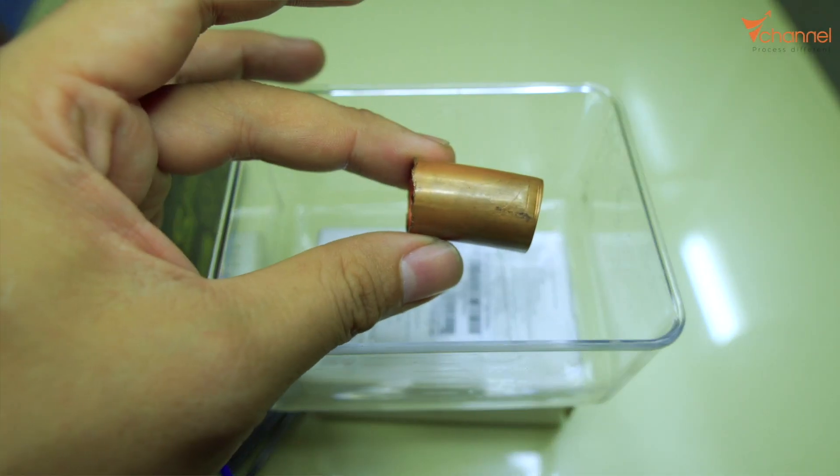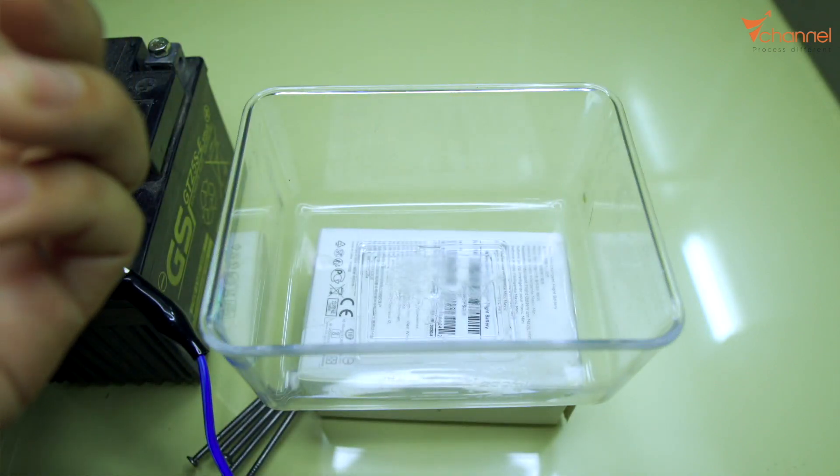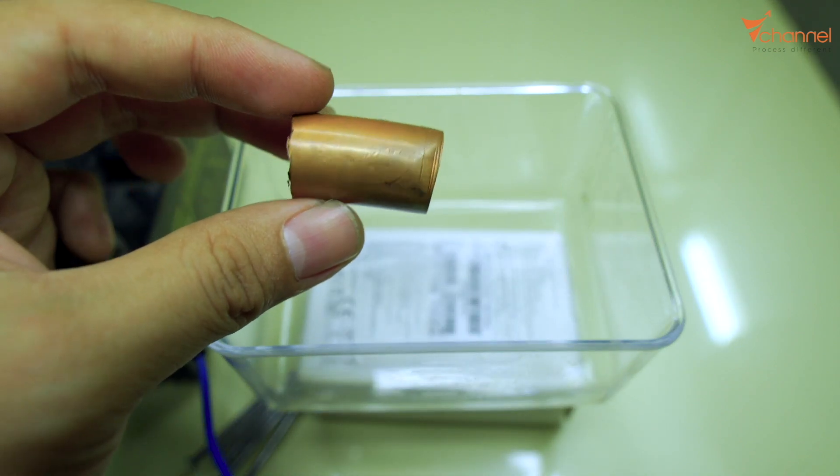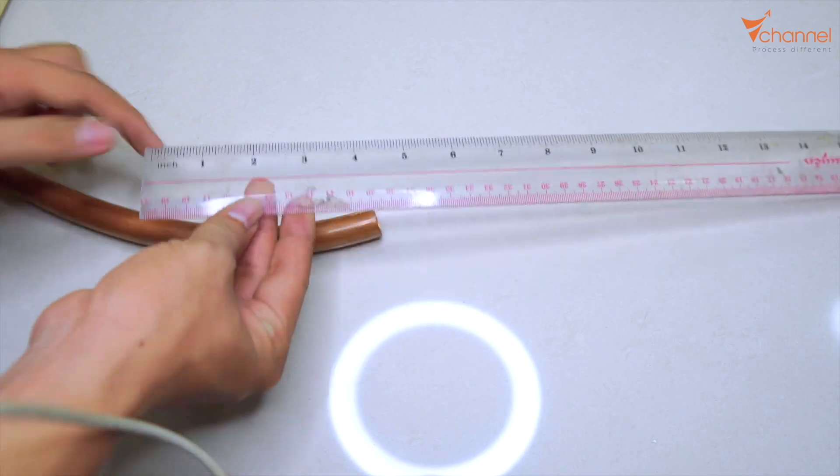The first step: we need two electrodes. We have the negative connected to the push tube, a copper tube. We will cut this copper tube, one and a half inches.